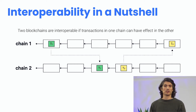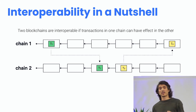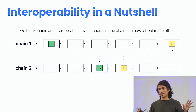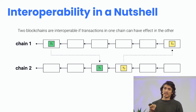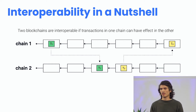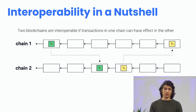Let's start by asking a question: what is interoperability? In a nutshell, we can say that two blockchains are interoperable if a transaction in one chain can have an effect in the other chain. As an example, a transaction T1, here in green in chain one, is first included in chain one and then has an effect later on chain two. Vice versa, a transaction T2, here in yellow, is first included on chain two and then has an effect on chain one.